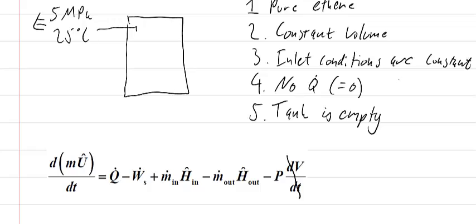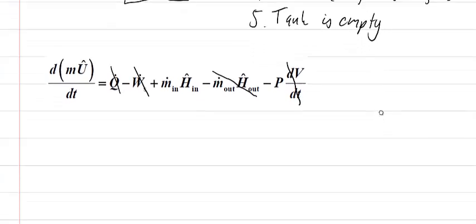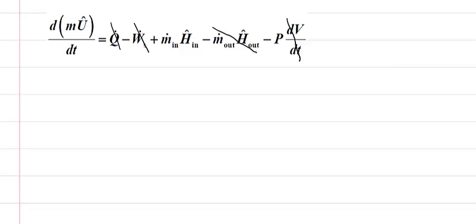So there's no work happening. We've already said that we're expecting the heat to be negligible, and we've got no flow out of the system. And so what we end up with is a much simplified equation.